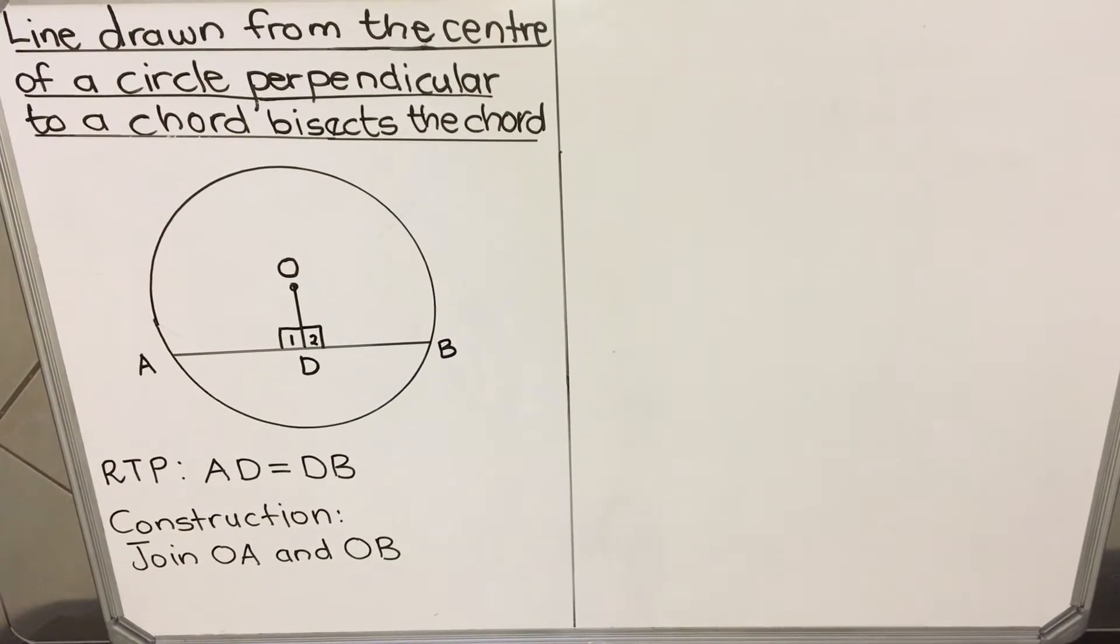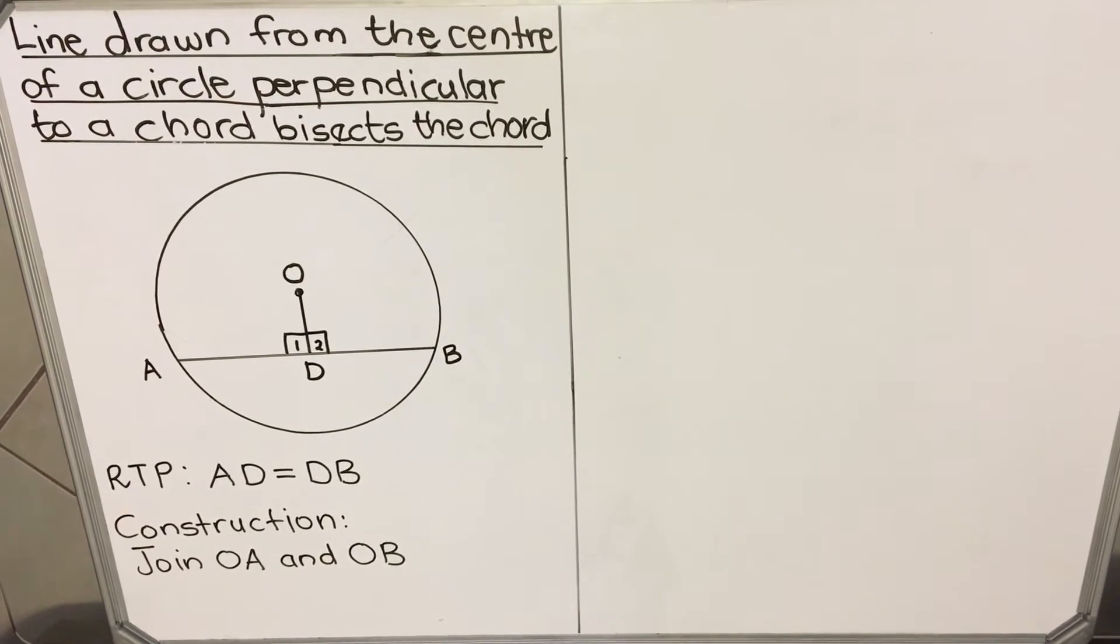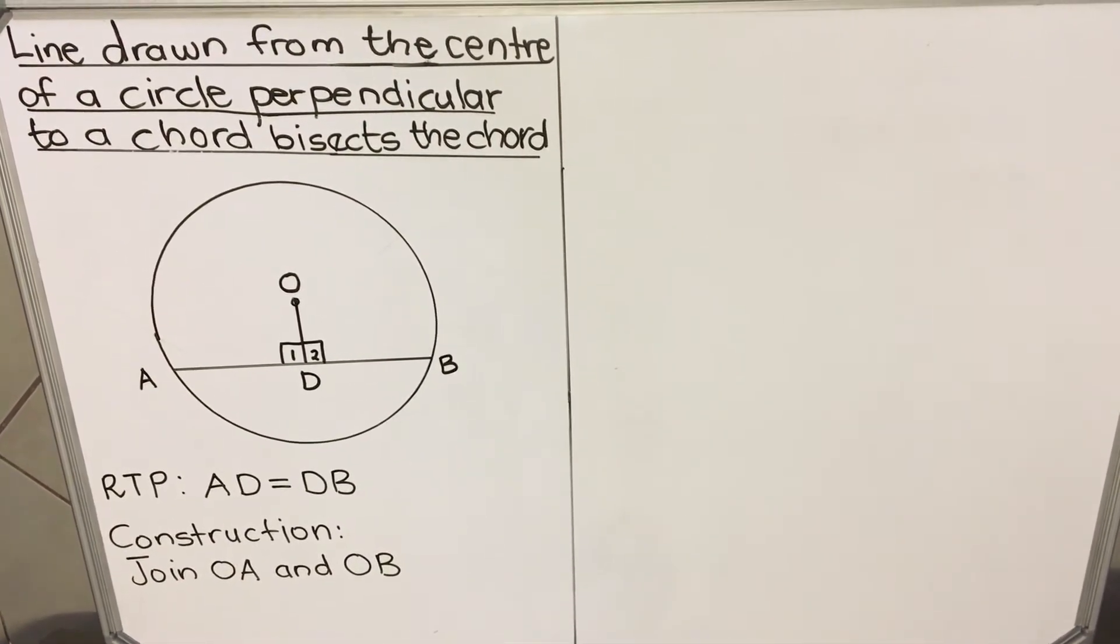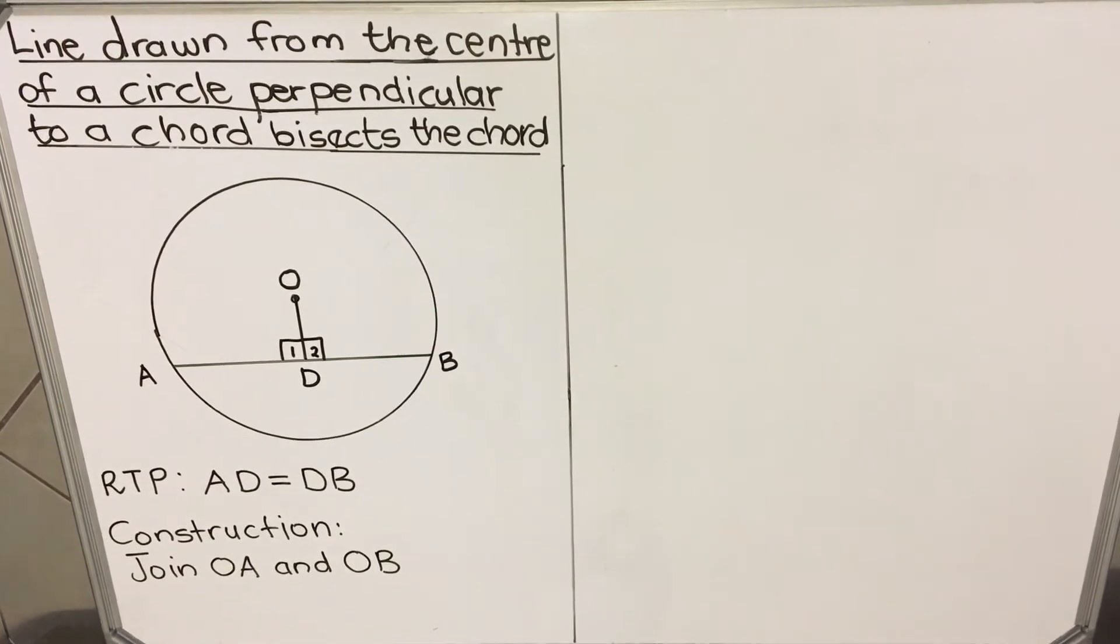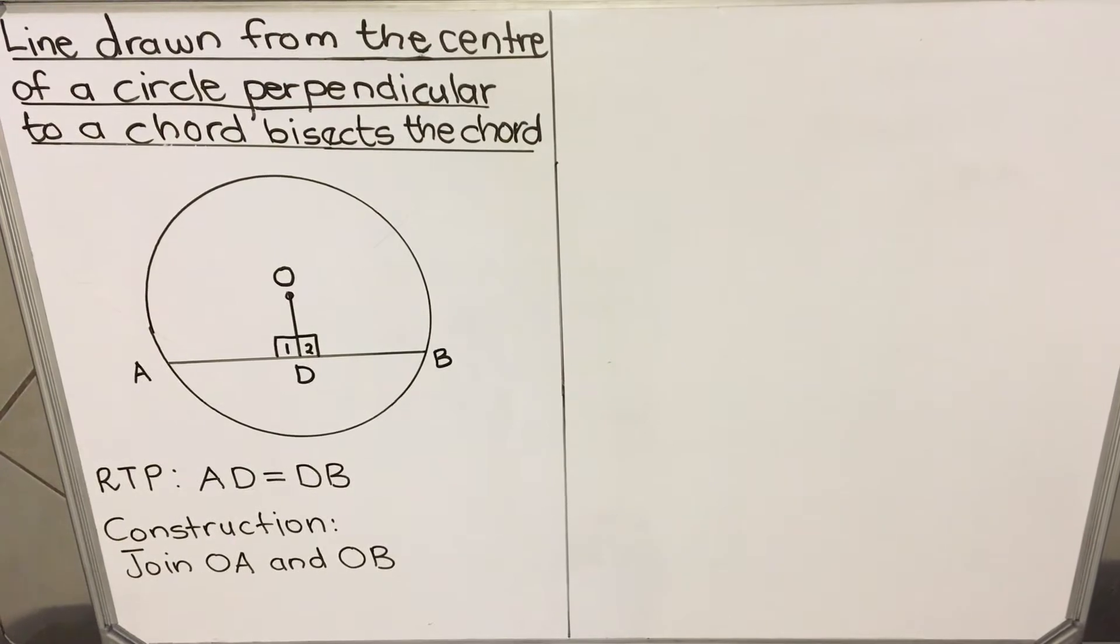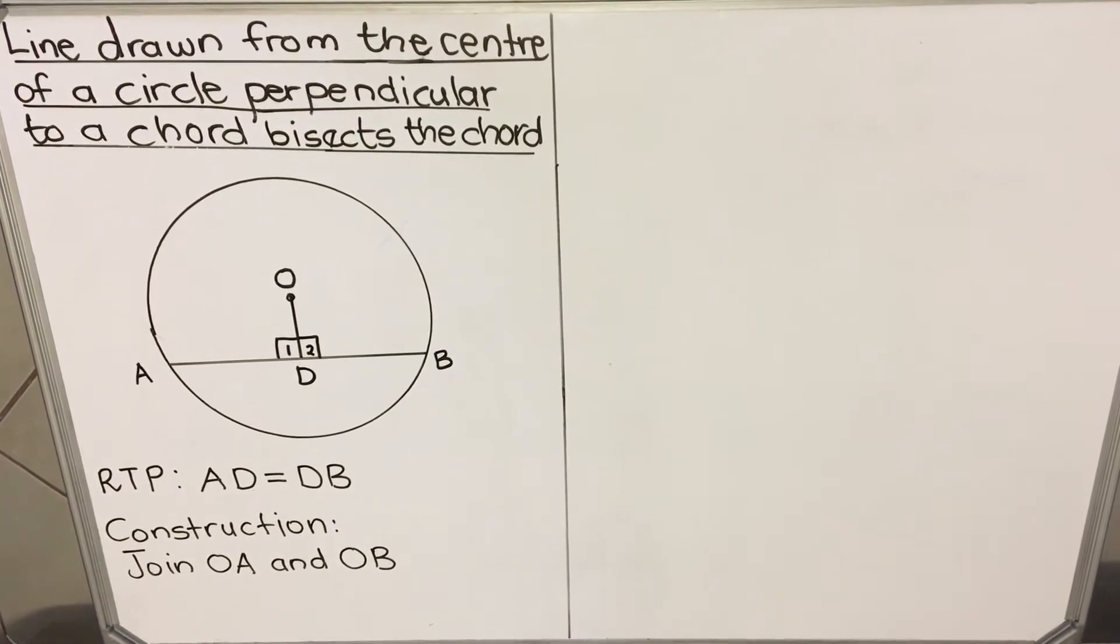Hello everyone. This is a lesson on Euclidean Geometry. We're going to look at the theorem that says a line drawn from the center of a circle perpendicular to a chord bisects the chord. We're going to look particularly at the proof, how you do the proof of this theorem.